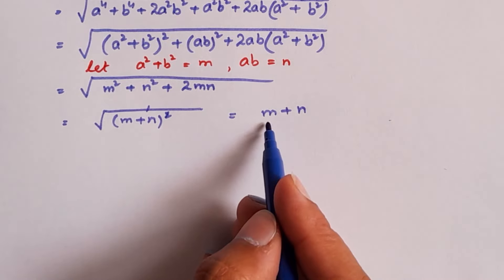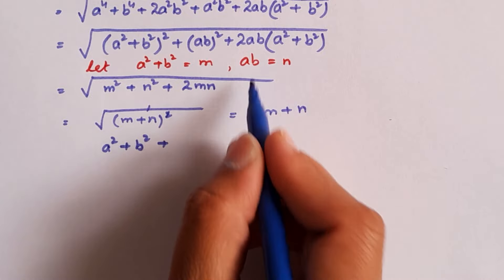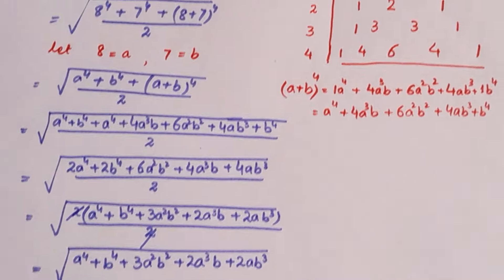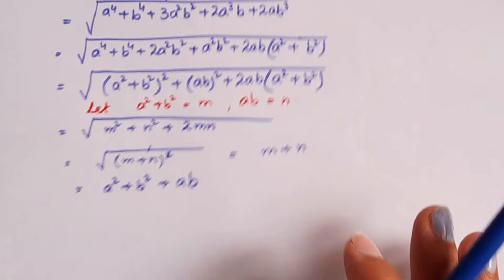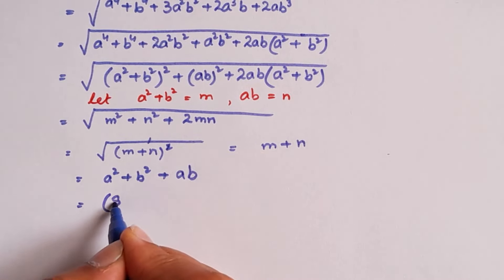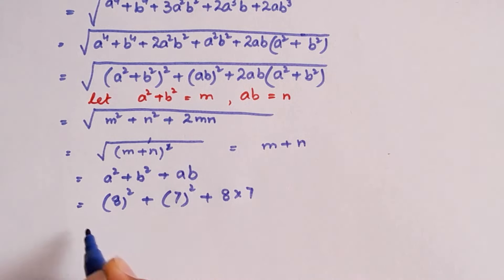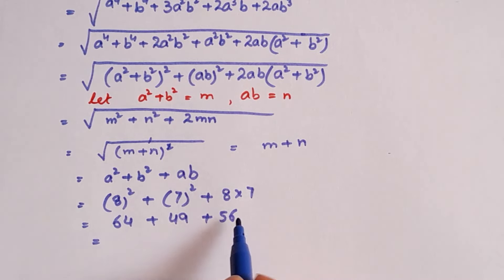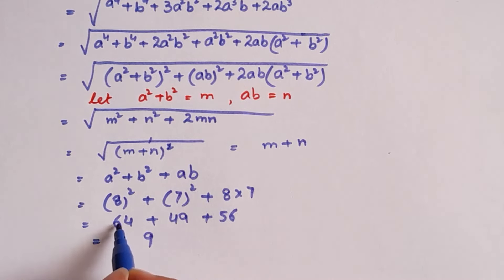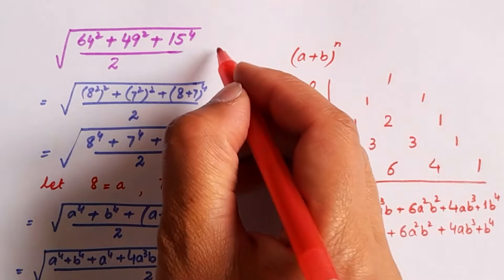Now we substitute back the values of m and n: m = a² + b² and n = ab. And we substitute a = 8, b = 7. So we get: 8² + 7² + 8 × 7 = 64 + 49 + 56. Adding these: 64 + 49 + 56 = 169. So the final required value of this radical expression is 169.